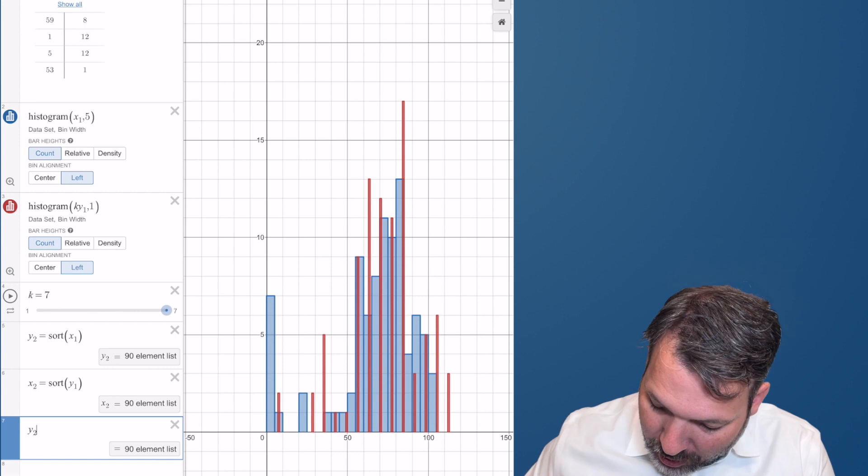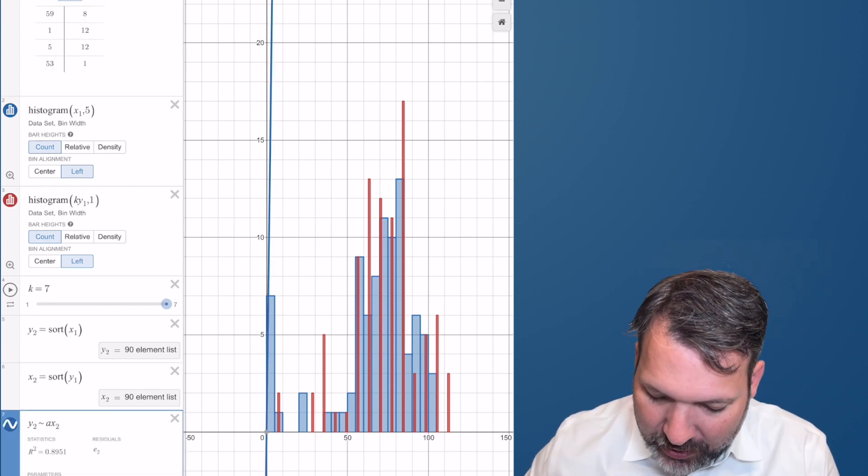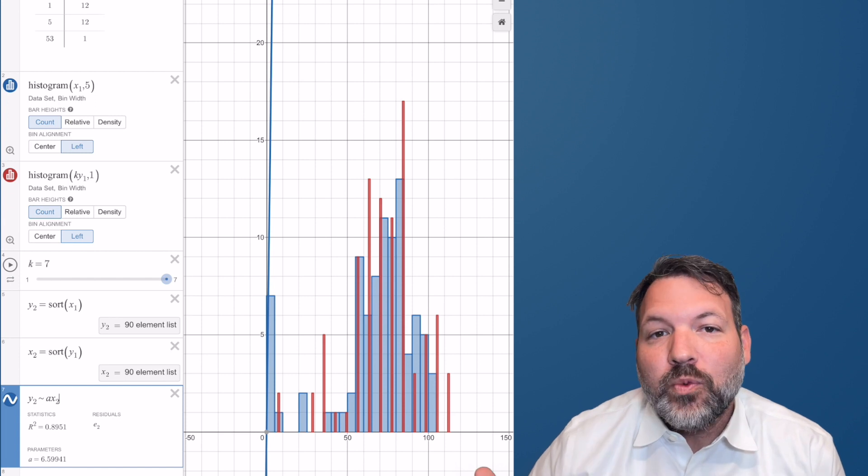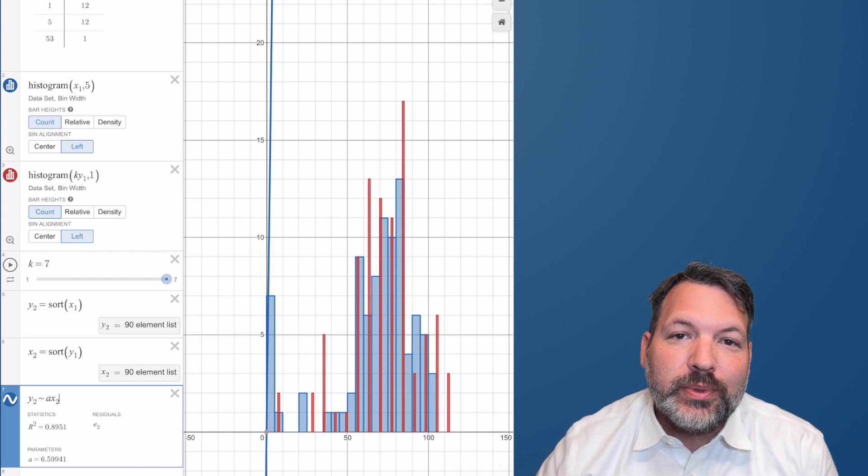If we perform a linear regression on this data, it's easy enough to see that the slope of that linear regression is just about seven, and so that's again where this one to seven relationship is coming from.